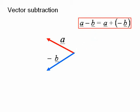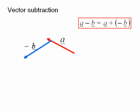Having drawn minus b, we then just add these two vectors a and minus b in the normal way using either the triangle or parallelogram rule. Here you can see we are using the triangle rule.